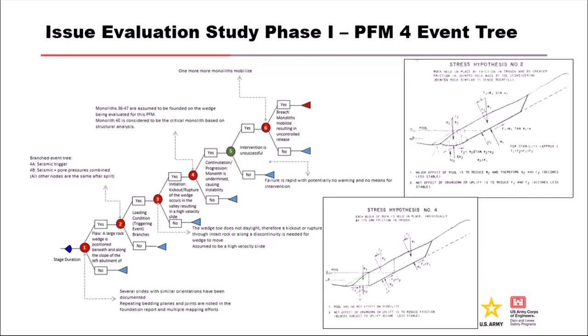Node 4 is progression - continuation and progression. The surface has to progress to undermine the dam monoliths, causing instability. So what's the probability that we undermine the dam monoliths enough to cause them to be unstable? Intervention is our next node - this is a rapid failure; there's really no means for intervention. We still carry it, but there's really not much we think we can do to intervene on this failure mode specifically. The last node is breach - the monoliths were undermined and unstable, and this is them actually mobilizing and moving, resulting in an uncontrolled release.